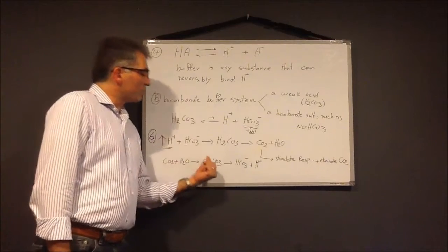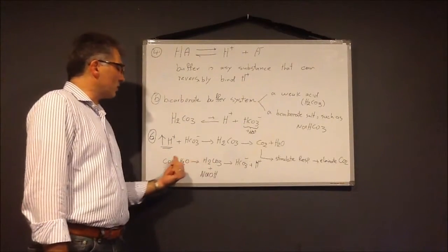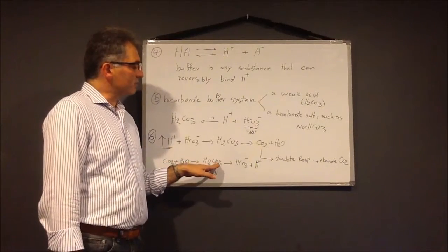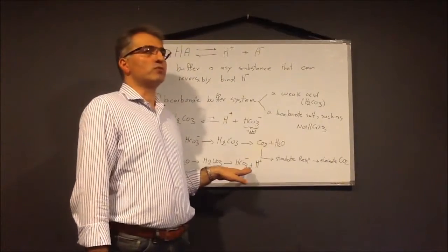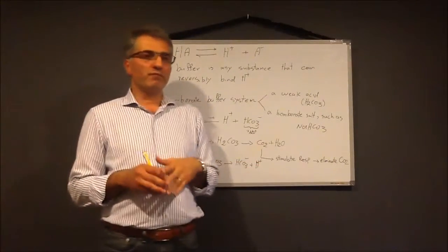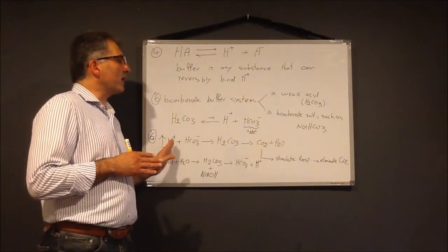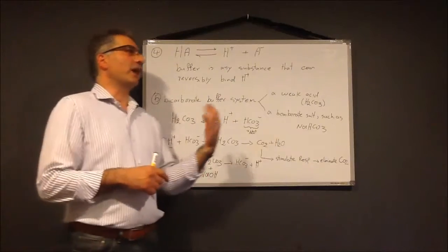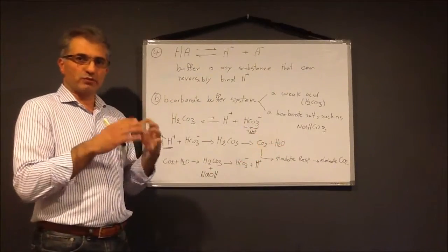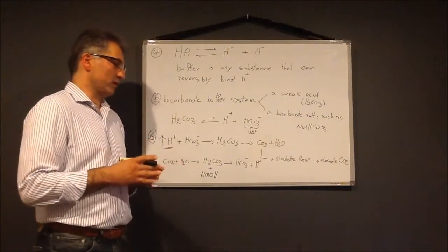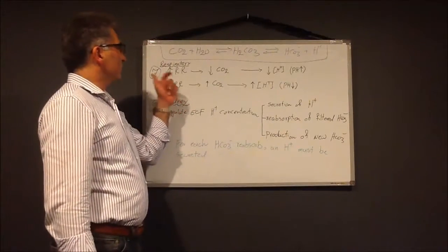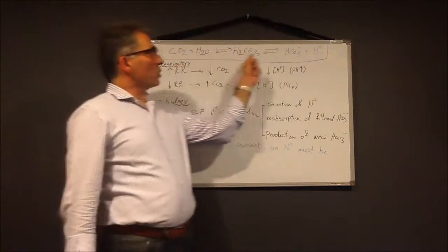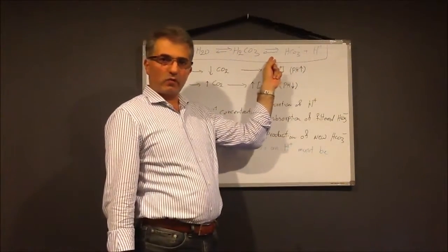In the opposite direction, if we have a strong base, the base reacts with the weak acid to produce bicarbonate and a proton. Our body then needs to produce more acid from CO2. In simple terms: more acid means more CO2 is produced; more base means our body uses CO2 to neutralize the excess base. This is the gold standard formula for acid-base regulation in the body.